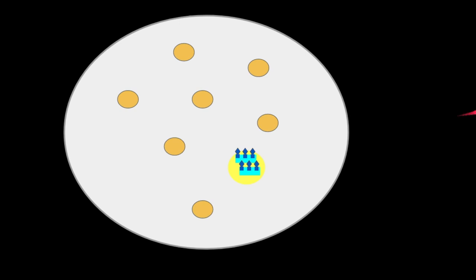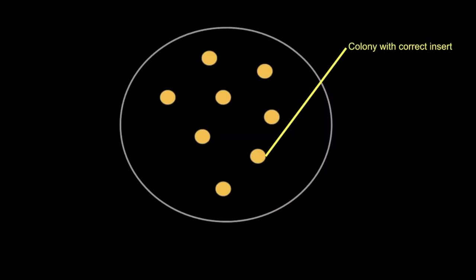Now we know the location of colonies that have the correct insert we want to research. So we go back to the original plate and select the colonies that were positive.